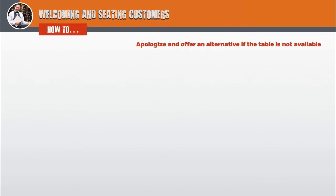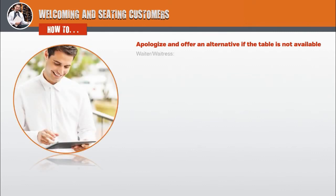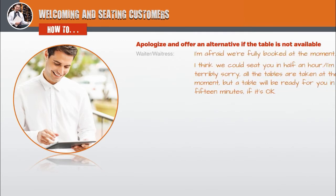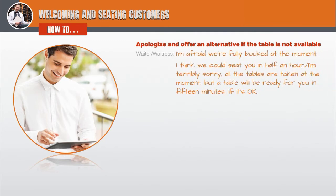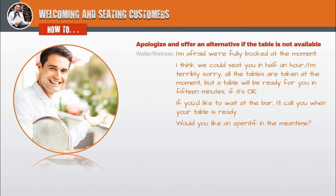How to apologise and offer an alternative if the table is not available. Waiter, waitress: I'm afraid we're fully booked at the moment. I think we could seat you in half an hour. I'm terribly sorry, all the tables are taken at the moment, but a table will be ready for you in fifteen minutes, if it's okay. If you'd like to wait at the bar, I'll call you when your table is ready. Would you like an aperitif in the meantime?